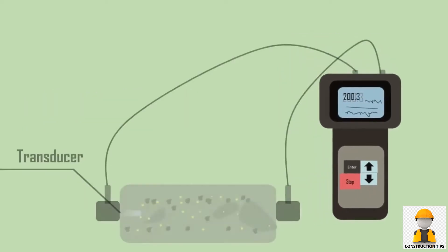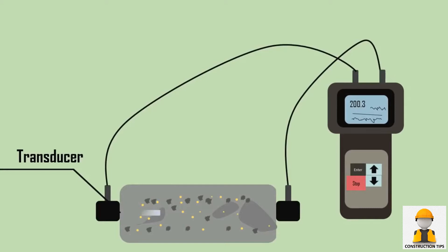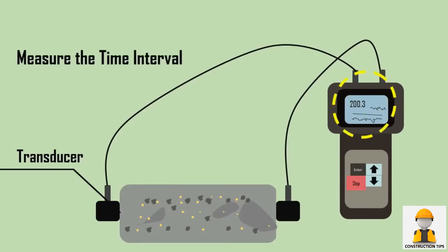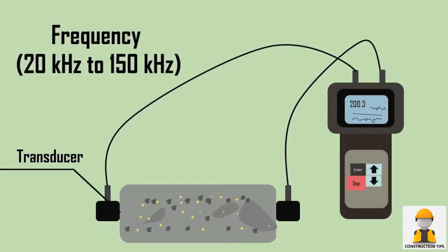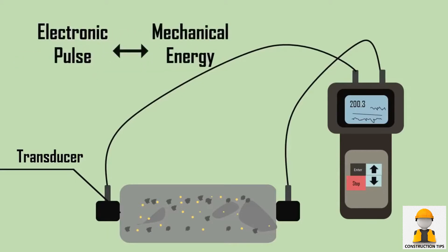The ultrasonic device can send the pulse to the transducer and measure the time interval for a pulse to travel from the transmitter to the receiver end. The two transducers used can operate within the frequency range of 20 kHz to 150 kHz, and can transform electronic pulses into mechanical energy and vice versa.